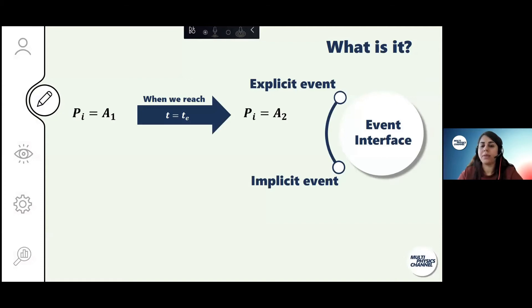Another event is implicit events. You want to change your value after a certain point, after reaching a condition, but you don't know when it happens. But the only thing you know is when this situation happens, then you change your parameter.